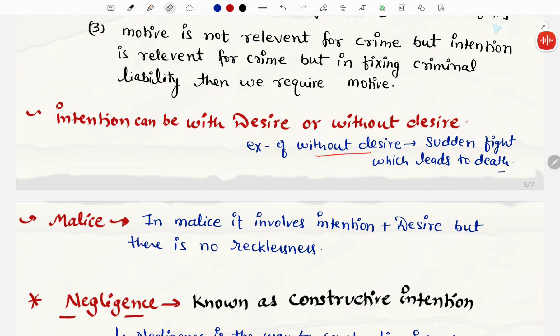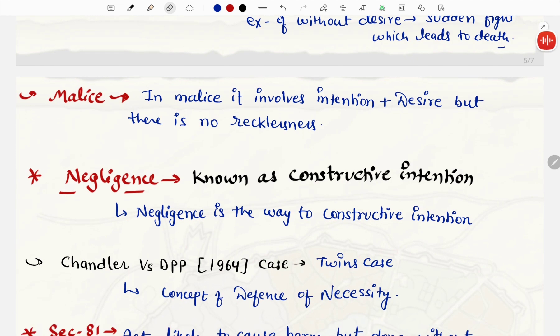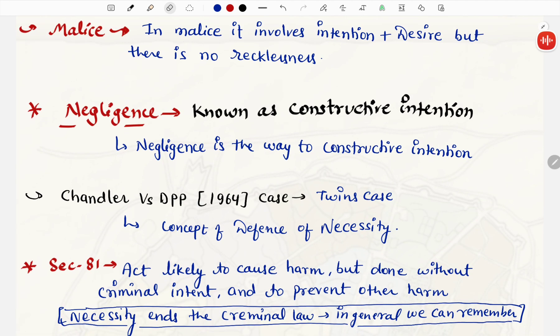There is one more word, which we gonna use in law of crime, that is malice. What do you mean by malice? In malice, it involves intention plus desire, but there is no recklessness. Malice ke andar intention bhi hai, desire bhi hai, lekin la parwahi nahi honi chahiye.